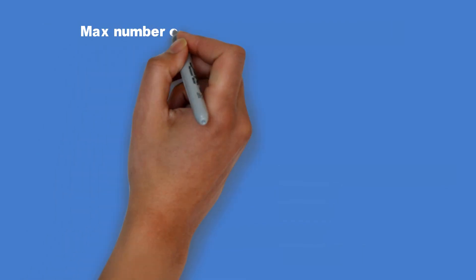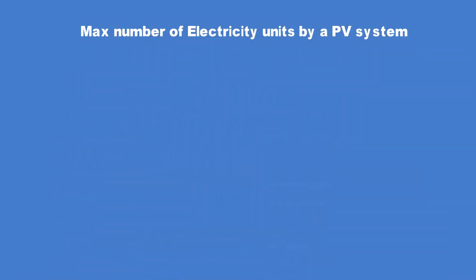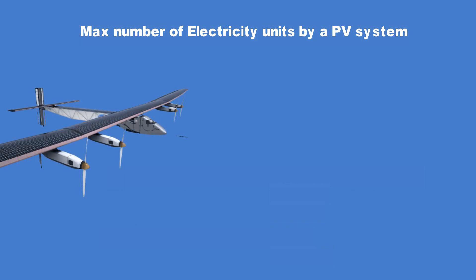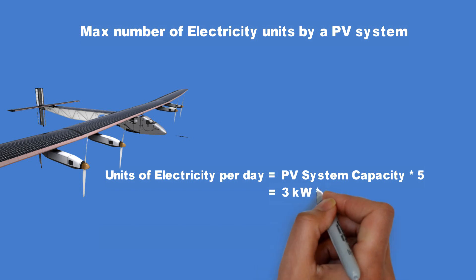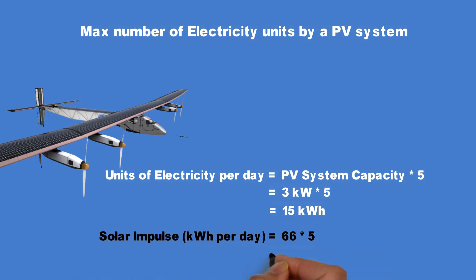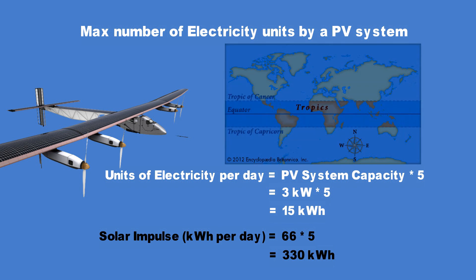The second calculation tip is for finding the maximum number of electricity units a PV system can generate during the day. To do that one can simply multiply the peak capacity of the system in kilowatts by 5. So a 3 kilowatt PV system could yield a maximum of 15 units of electricity. A word of caution here this thumb rule is more accurate for places close to the equator and up to 23 degree latitude. For latitudes of up to 45 degrees a factor of 4.5 instead of 5 can be used. At even higher latitudes the angle of inclination of the cells has a much stronger bearing on the output of the photovoltaic system.